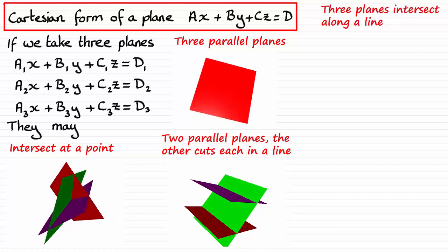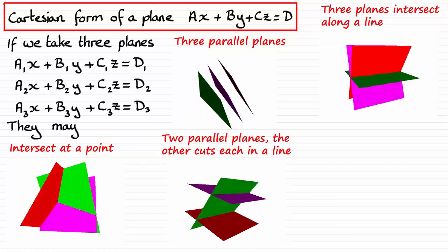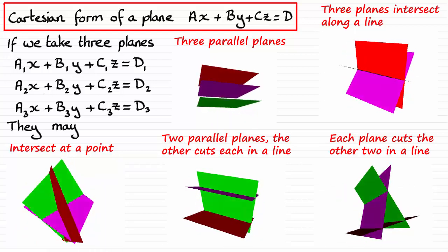You could have three planes that intersect along a line, or you might have each plane cuts the other two in a line.